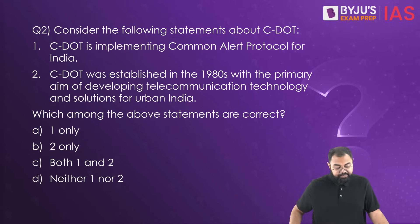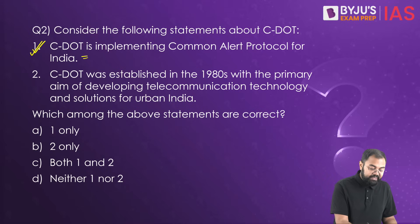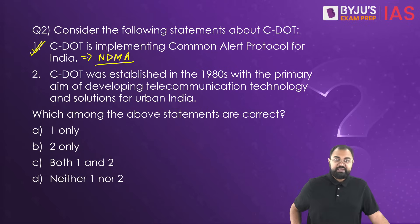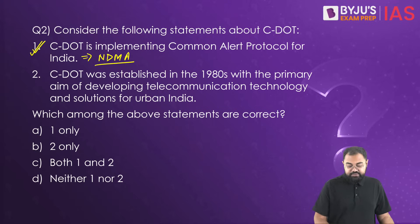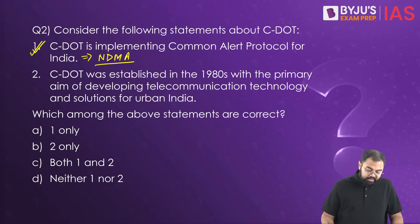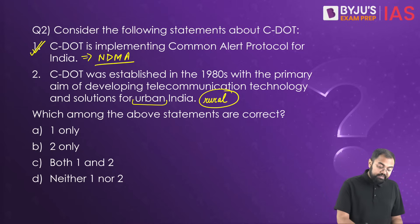First statement: C-DOT is implementing the Common Alert Protocol for India — this is correct, as they are developing this protocol for NDMA (National Disaster Management Authority) to make early warning for disaster management more effective. Second statement: it was established in the 1980s with the primary aim of developing telecommunication technology for urban India — this is partially incorrect, as there was a special focus on rural areas specifically.